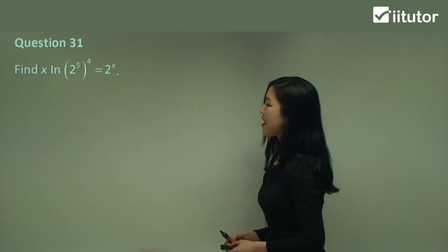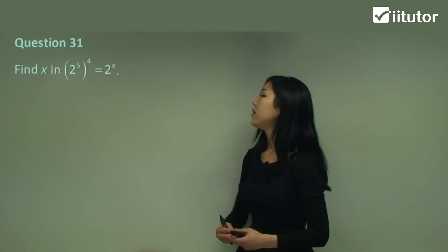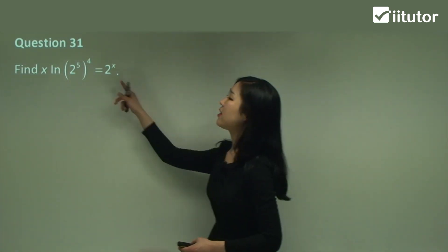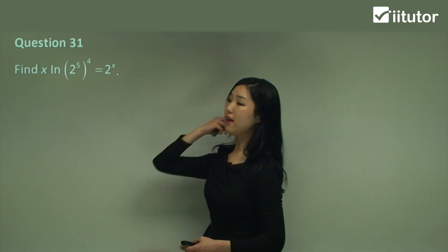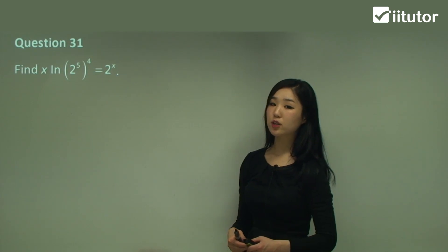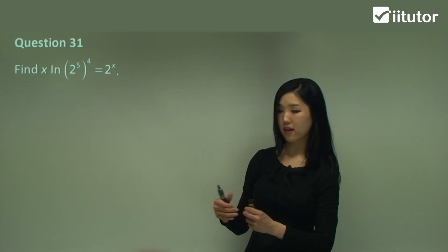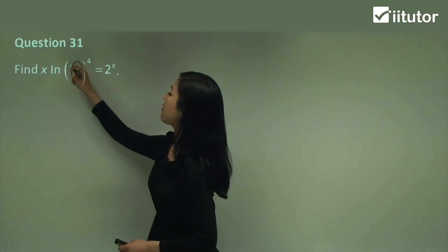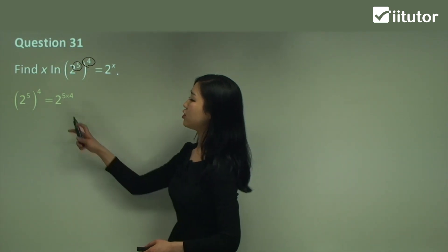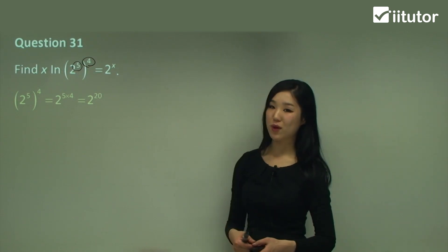Question 31: find x in 2 to the power of 5, the whole thing to the power of 4, if it's equal to 2 to the power of x. So let's leave the right side and work with the left side. We have 2 to the power of 5 to the power of 4. We multiply the indices inside and outside the brackets together, so we multiply 5 and 4. That gives us 2 to the power of 5 times 4, which is 2 to the power of 20.